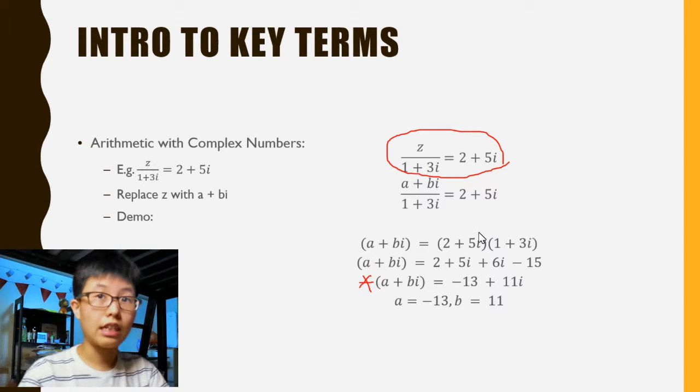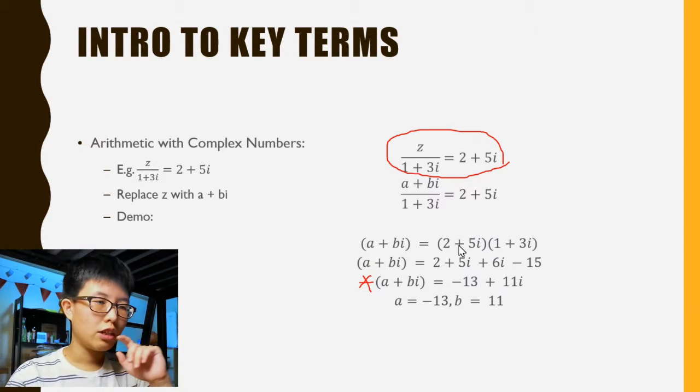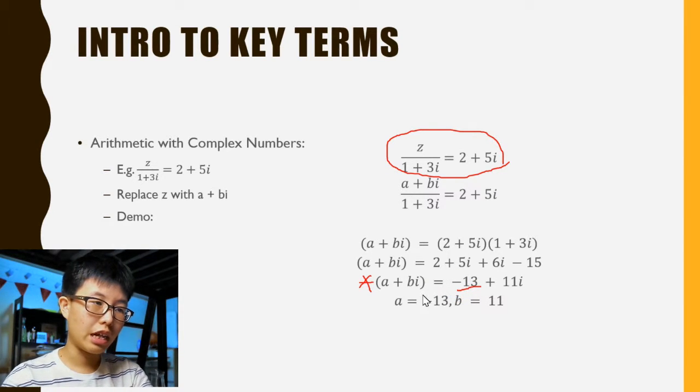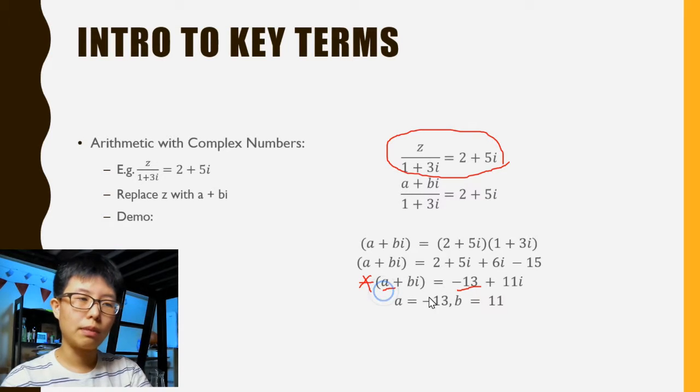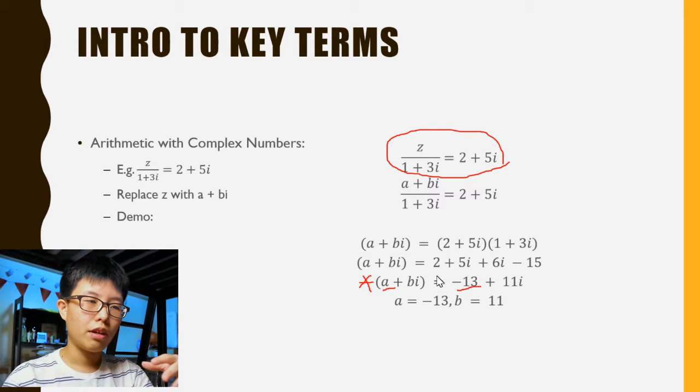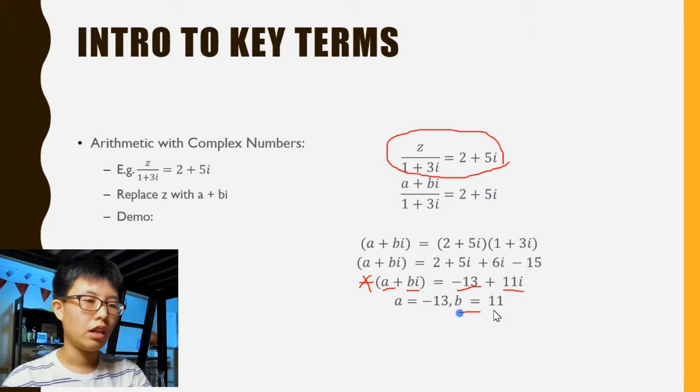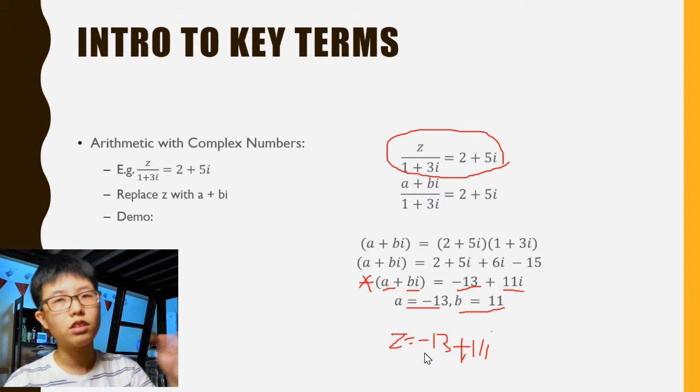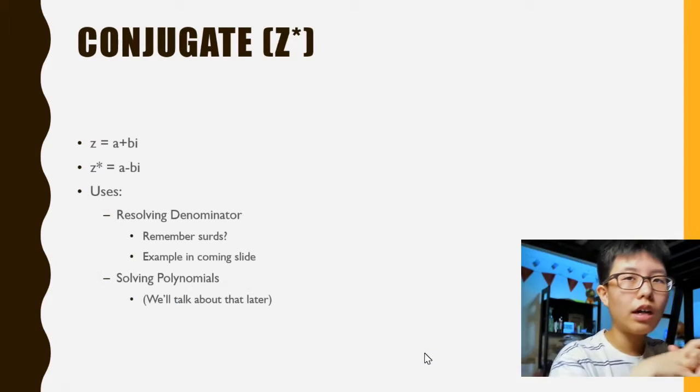What happens is, like I said, it's something like comparing coefficients. We look at the real part, which is the part without any i. The part without any i is -13, so a equals -13. For the i part, we have bi equals 11i, so therefore b equals 11. Hence, the final answer is z equals -13 + 11i. It's not that hard - if you're familiar with comparing coefficients, you should be able to do this no problem.